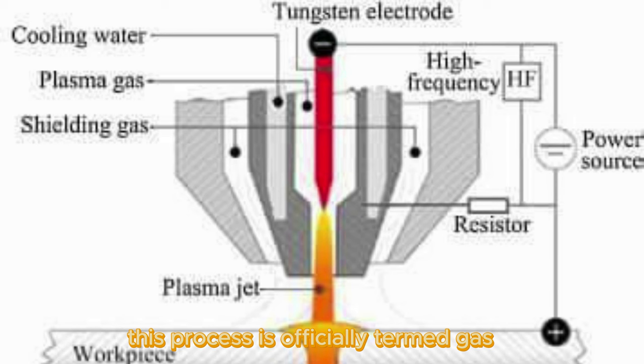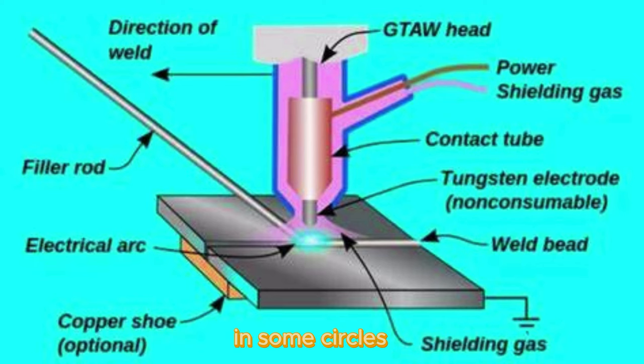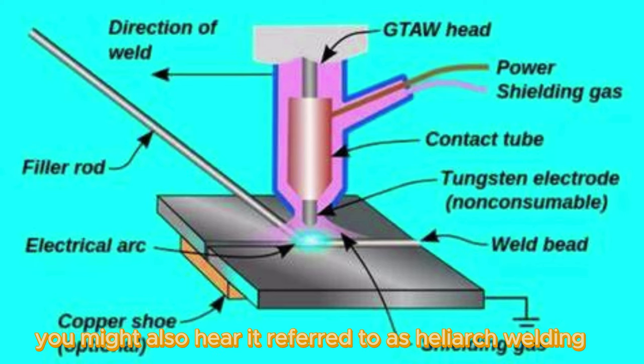This process is officially termed Gas Tungsten Arc Welding, or GTAW, by the American Welding Society. In some circles, you might also hear it referred to as Heli-Arc Welding.